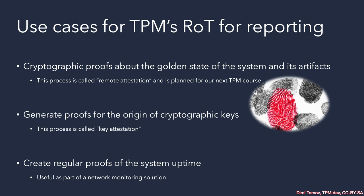Something special about the TPM compared to other HSMs is that it has a separate root of trust for reporting. This comes from the endorsement hierarchy, which provides unique machine identity. From there, different cryptographic proofs can be generated — whether a digital signature, a hash-then-signature, or the TPM2 quote explored in the advanced TPM class. This is a major advantage: comparing system state to a known good state, verifying configuration or even an entire application partition.